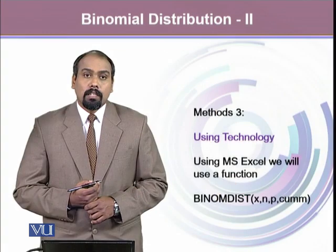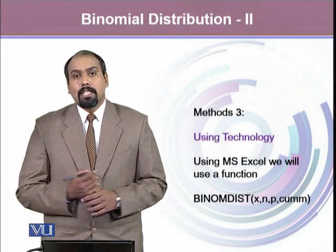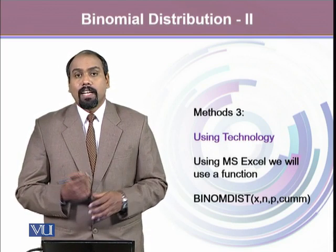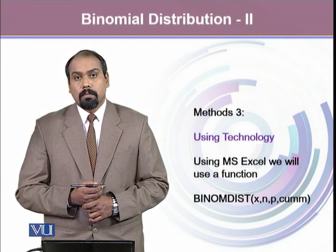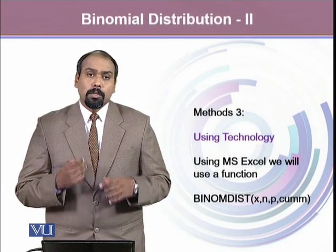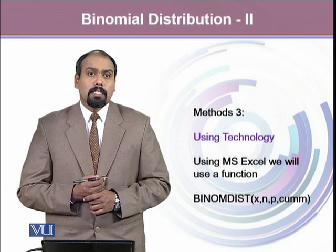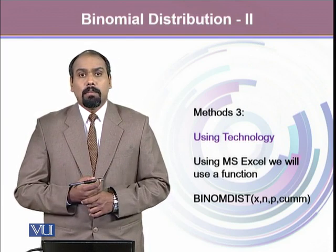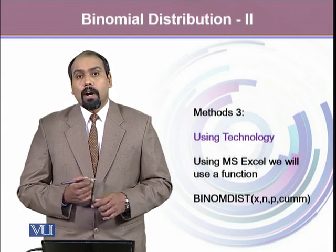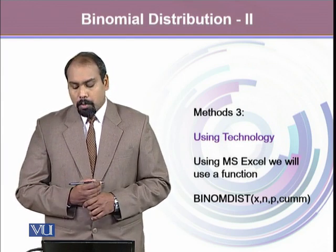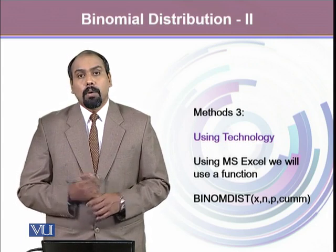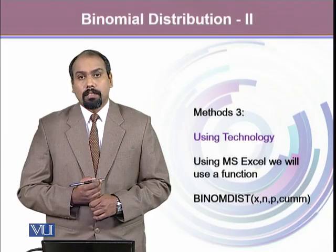The third method is using technology, where we will be using Microsoft Excel to find out the probability distribution. A special function used to find out the probabilities for the binomial probability distribution is known as BINOMDIST, where it requires some information: X, N, P, and cumulative. We'll talk about it further later. Thank you.